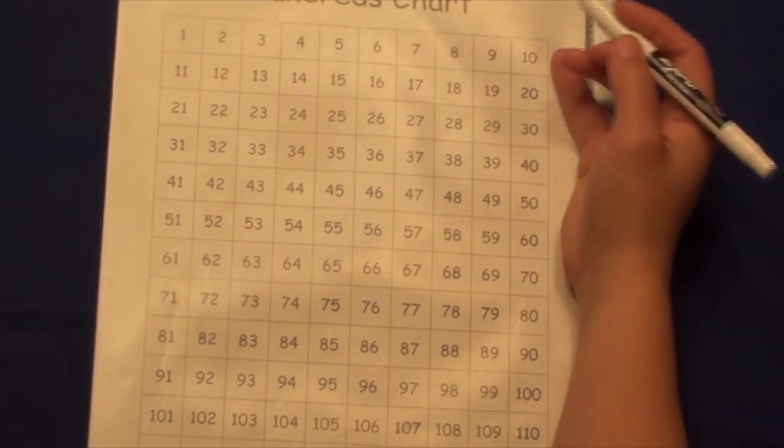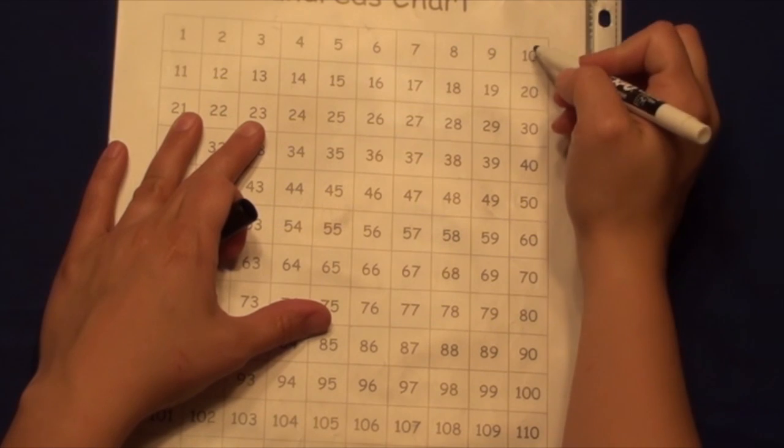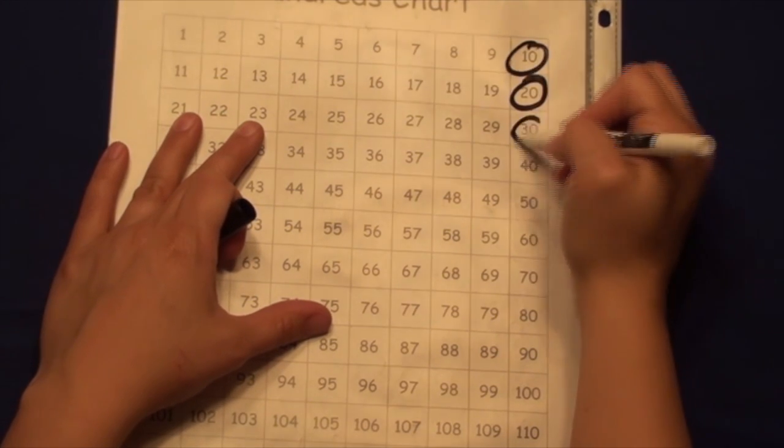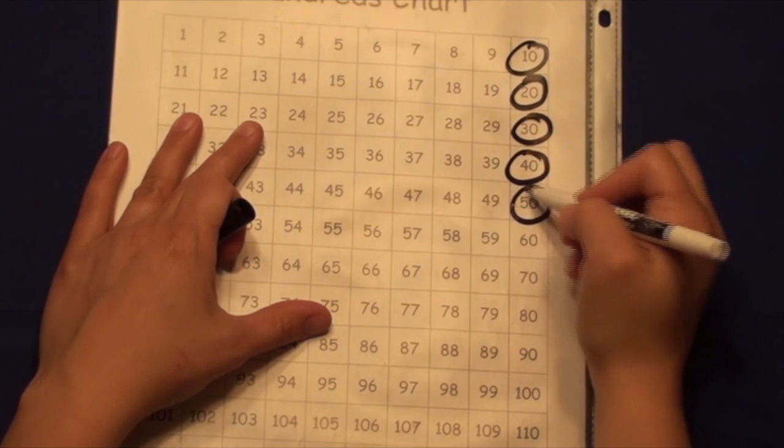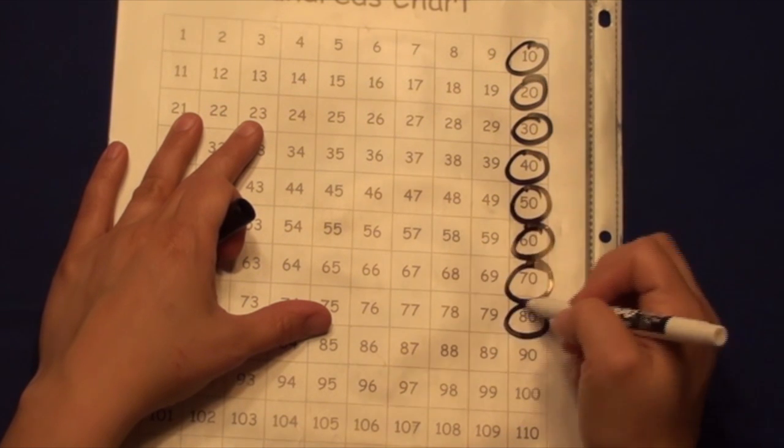The 10 more strategy works for any number divisible by 10: 10, 20, 30, 40, 50, 60, 70, and so on.